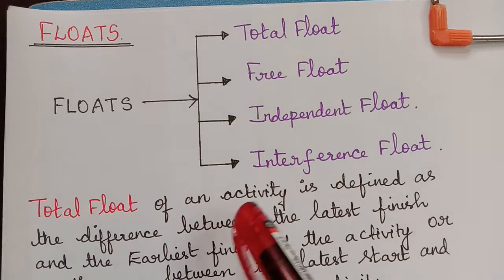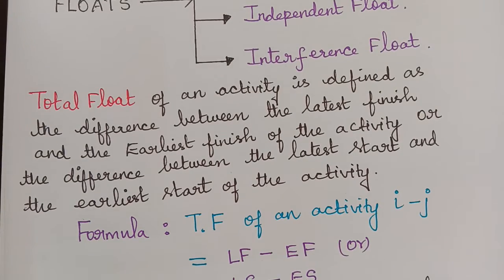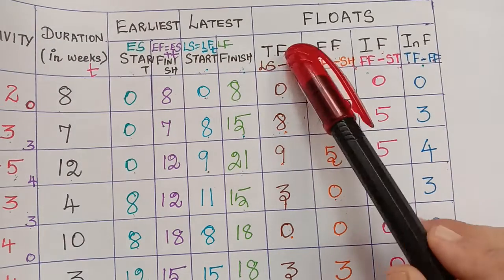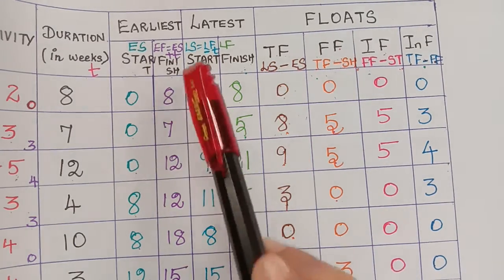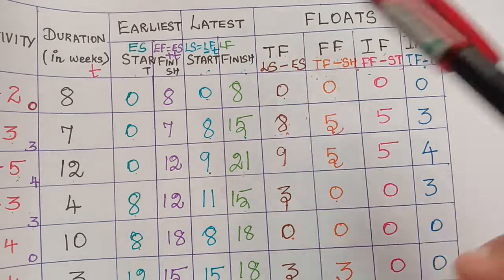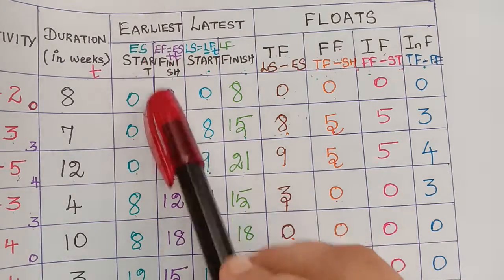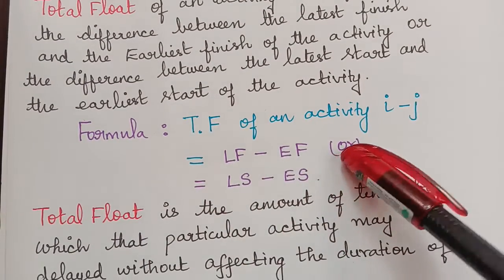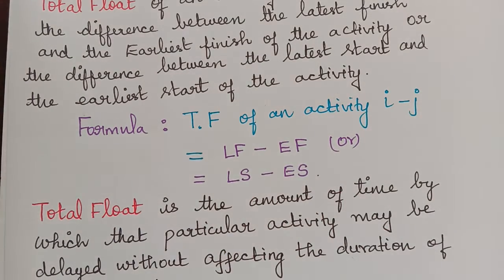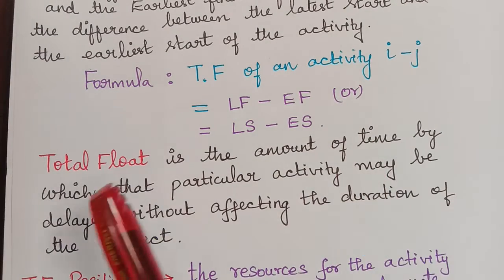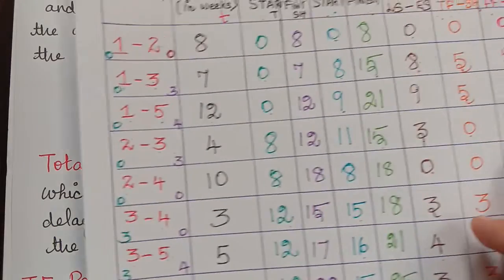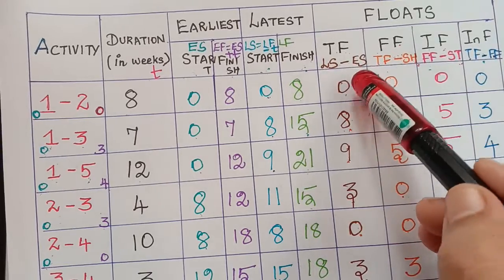Total float of an activity is defined as the difference between the latest finish and the earliest finish of the activity. It is also the difference between the latest start and the earliest start of an activity. So total float equals latest start minus earliest start, or equivalently latest finish minus earliest finish. Total float is the amount of time by which that particular activity may be delayed without affecting the duration of the project.